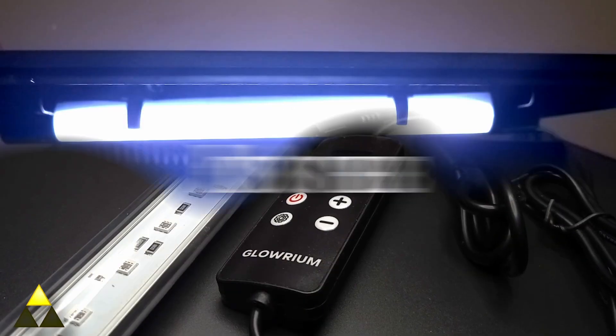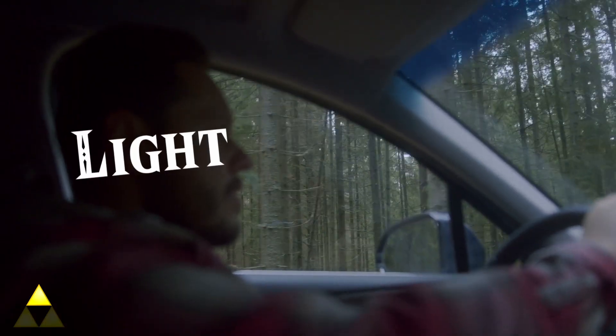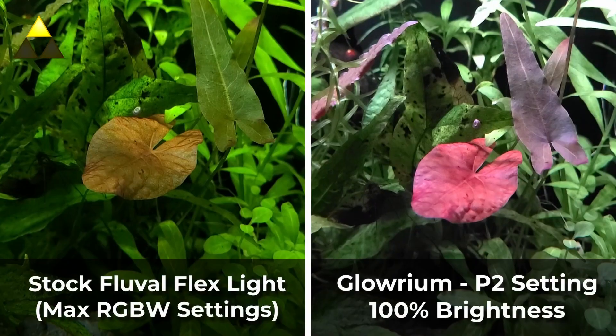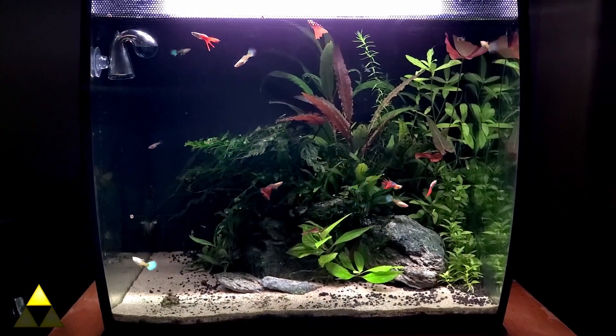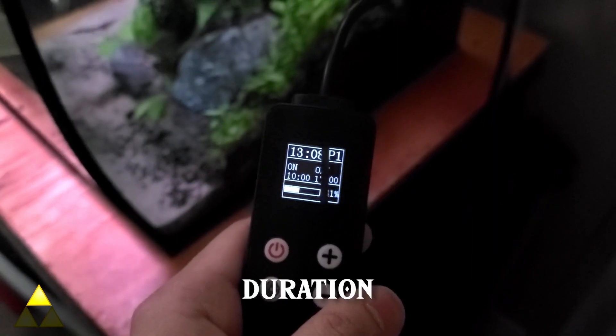First, we have light. It's the powerhouse of the cell, er, plants, driving photosynthesis. Different light spectrums influence plant growth and coloration. But it's not just about having light. It's about having the right intensity and duration.